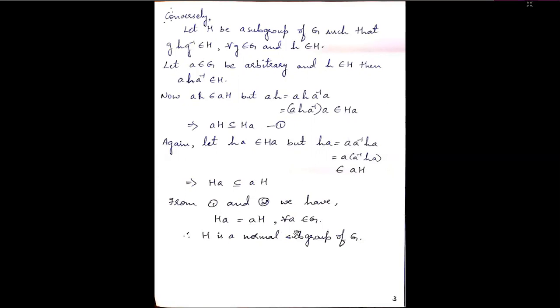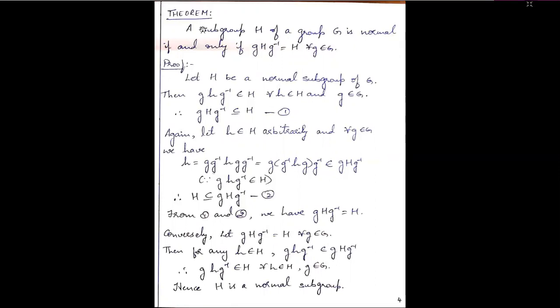Always remember: whenever you are showing that two sets are equal, if A equals B, we always prove A is a subset of B and B is a subset of A, then draw the conclusion. Now let us look at the next theorem: a subgroup H of a group G is normal if and only if gHg⁻¹ equals H for all g belonging to G.